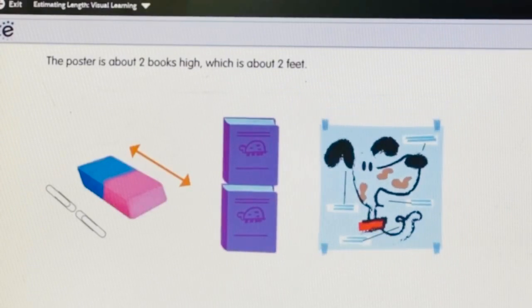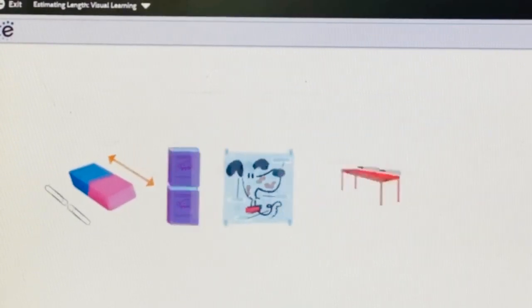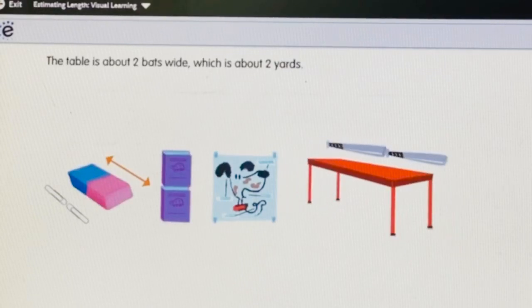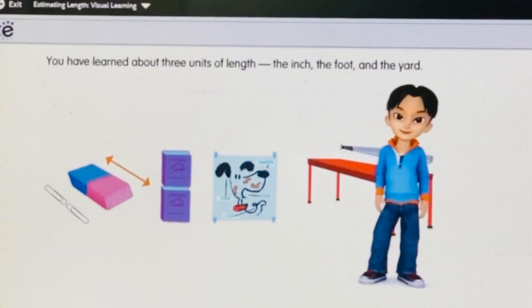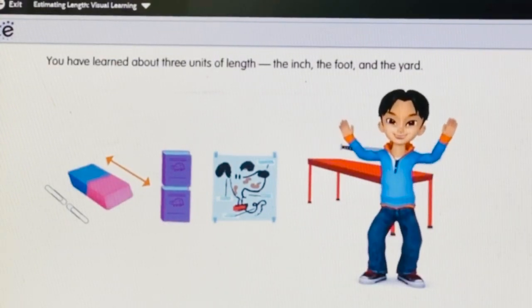The poster is about 2 books high, which is about 2 feet. The table is about 2 bats wide, which is about 2 yards. You have learned about 3 units of length, the inch, the foot, and the yard.